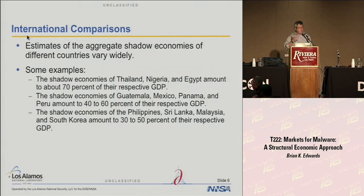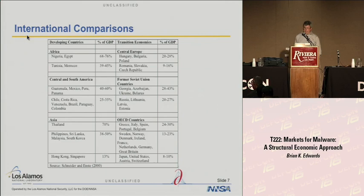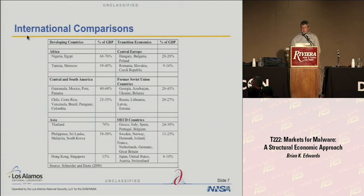That table, adapted from the Journal of Economic Literature article, gives you a sense of the ranges of the sizes of shadow economies in different countries. Japan, the United States, Austria, and Switzerland are relatively small. Nigeria and Egypt, on the other hand, are relatively large.